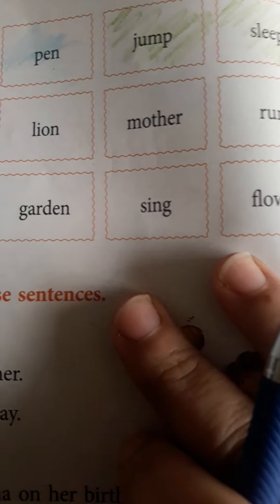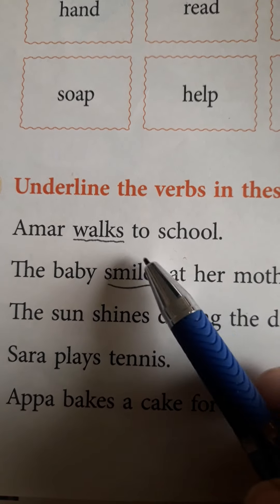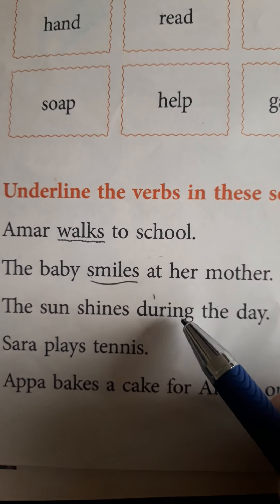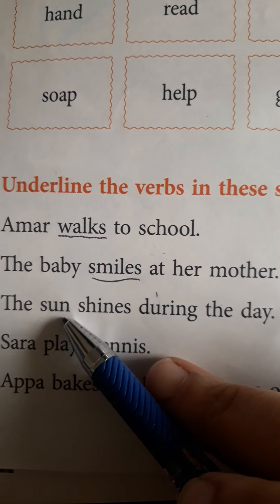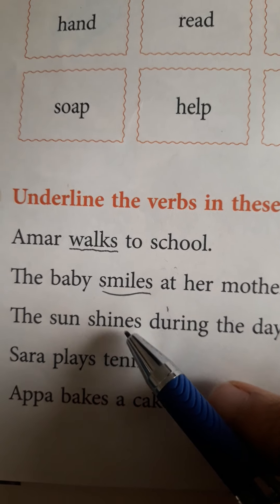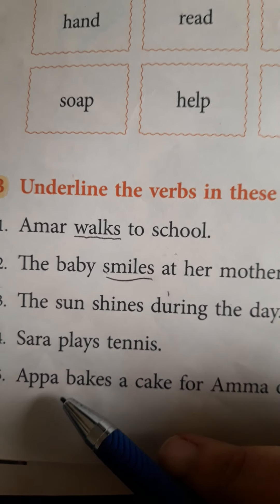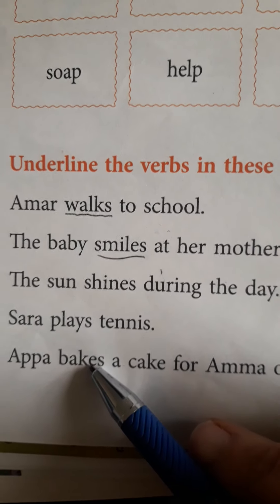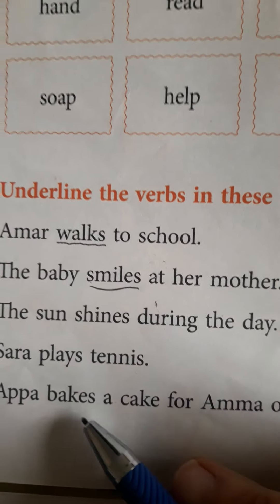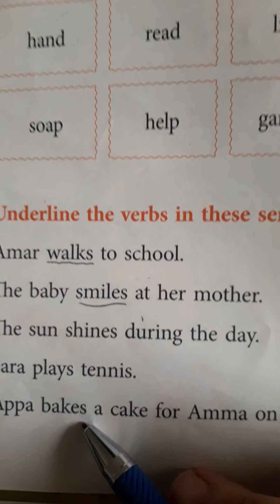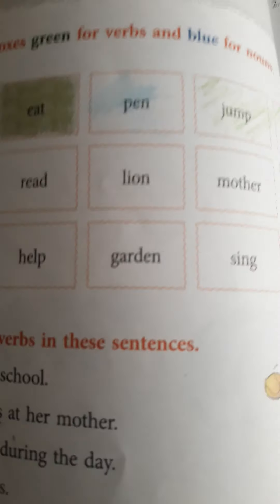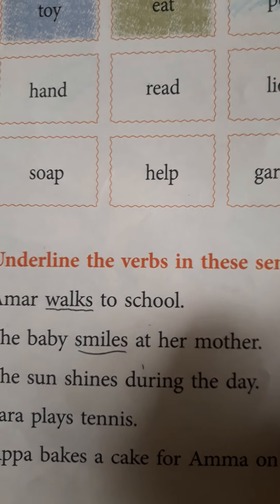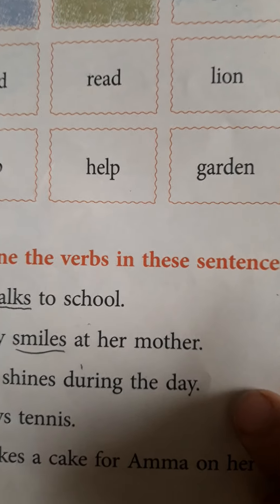You also learnt to choose a verb in a sentence. For example, 'The sun shines during the day' — what is the action being done here by the sun? Shining. So 'shines' is the verb. 'Appa bakes a cake for Amma on her birthday' — what is the action being done here? Bake. So 'bakes' is the verb. This is one way to find out the verb in a particular sentence.